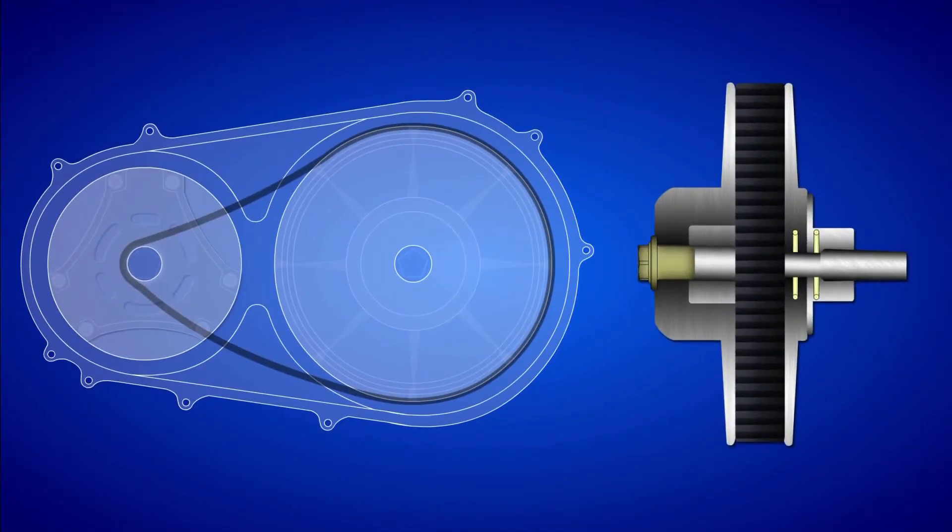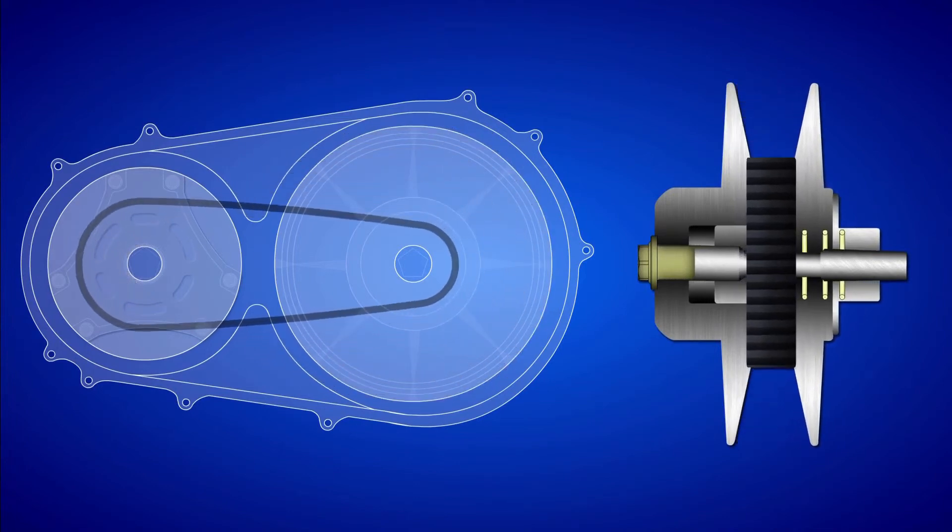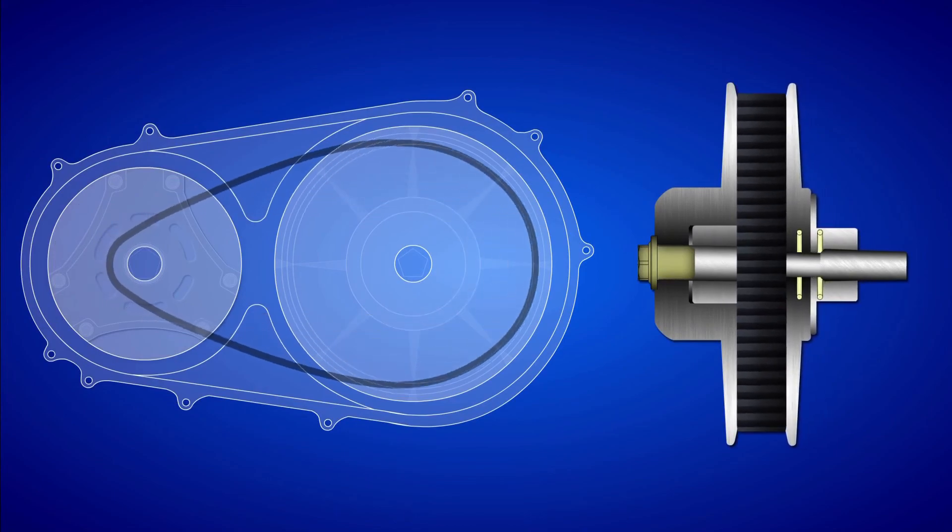Since driven clutches primarily sense torque, the sheaves open and close according to the force applied to it from the drive belt and transmission input shaft.